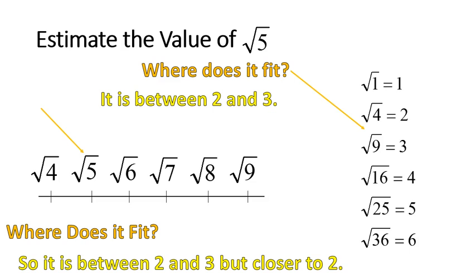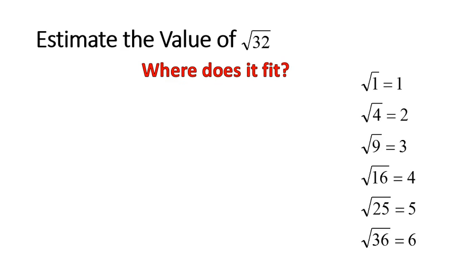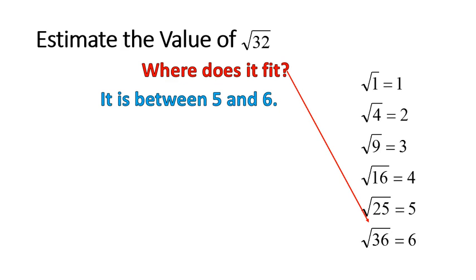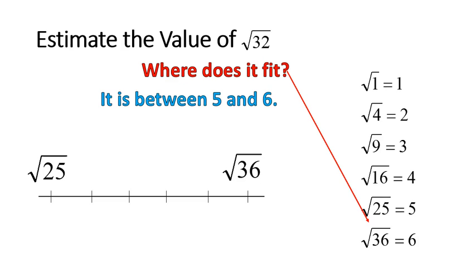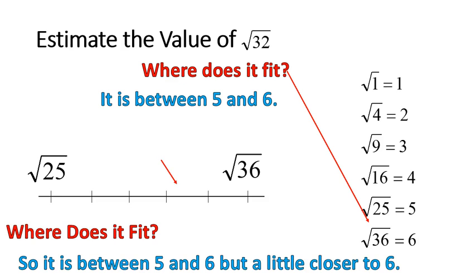For the square root of 32, where does it fit? It fits between the square root of 25 and the square root of 36 — in other words, between 5 and 6. On the real number line with 5 and 6 marked, it fits right about in the middle, but a little closer to 6, probably around 5.6 or 5.7.